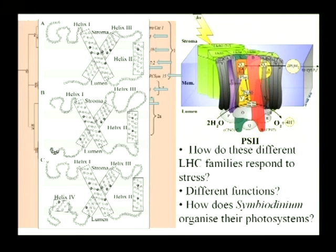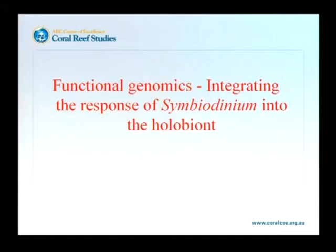We've got at least 21 different sequences, whereas higher plants have only 12 in total. So we're looking at a situation that is much more complex than what we see in higher plants or green algae.